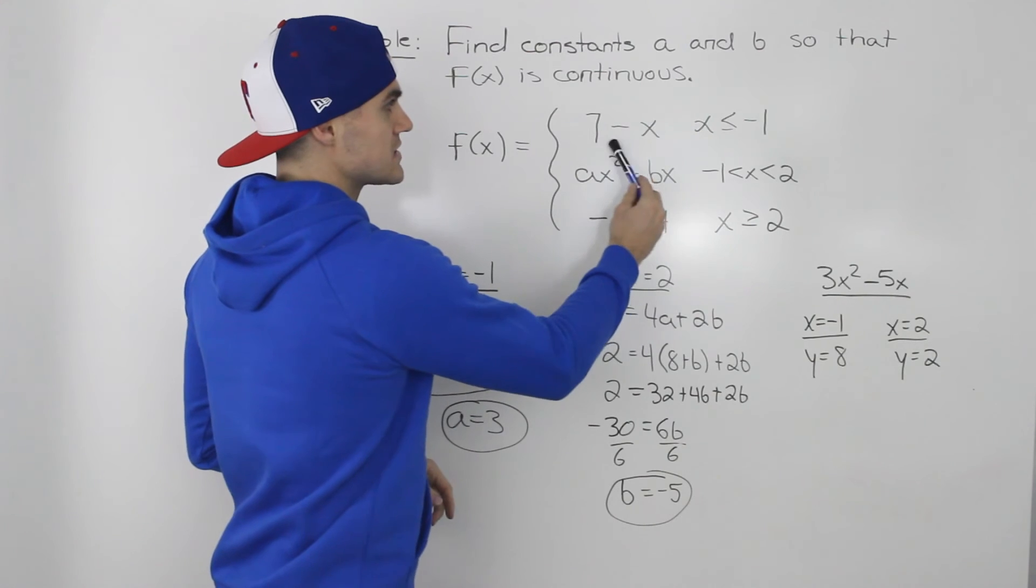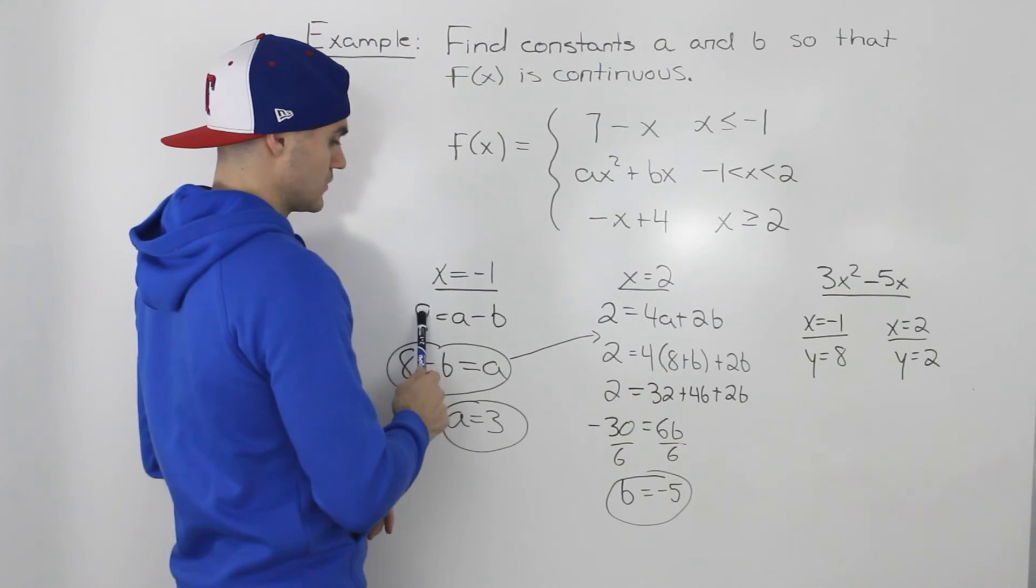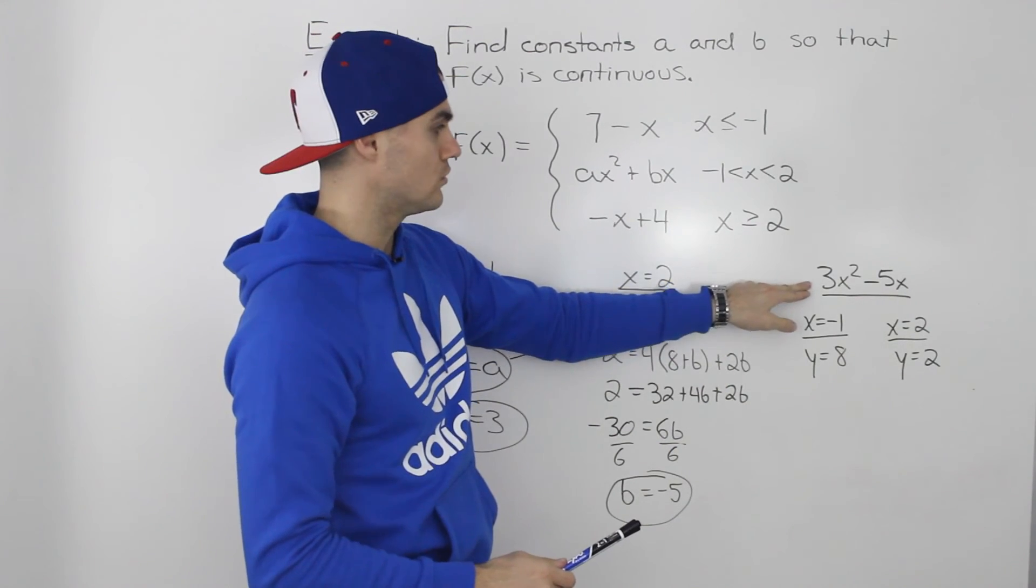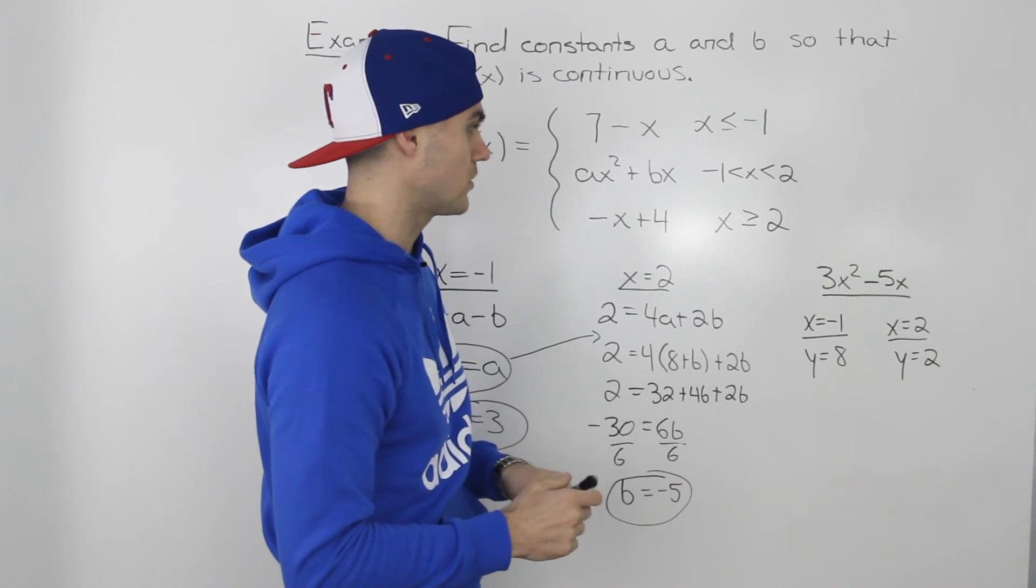For this first piece, at x equals negative 1, we found out that the y value was 8. If we plug in negative 1 into our new piece here, the y value would be 8 as well. So it's continuous at that meeting point.